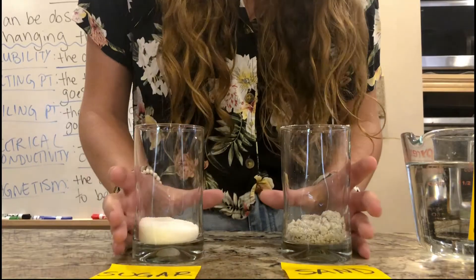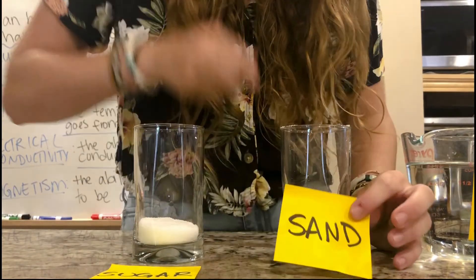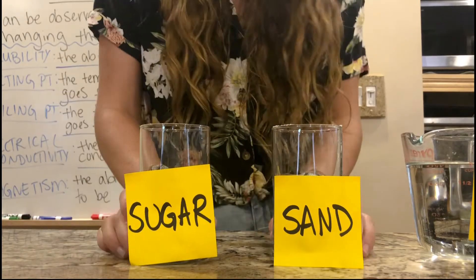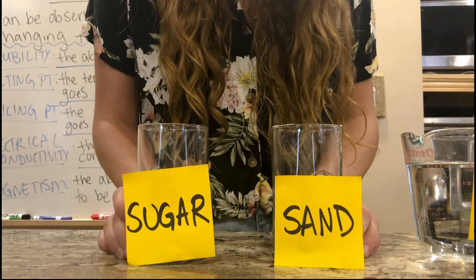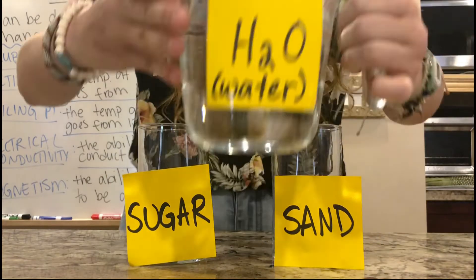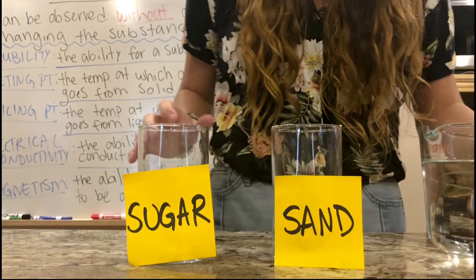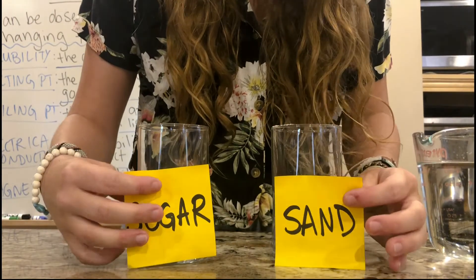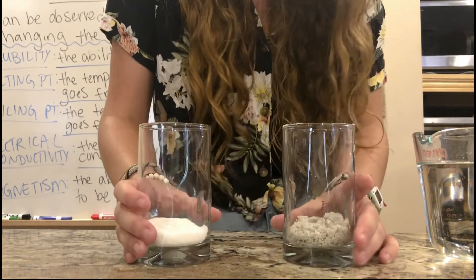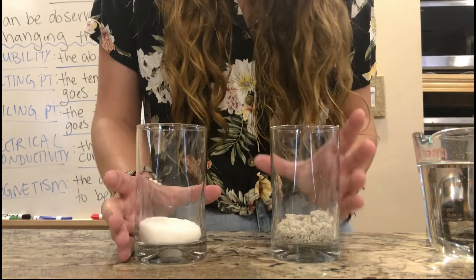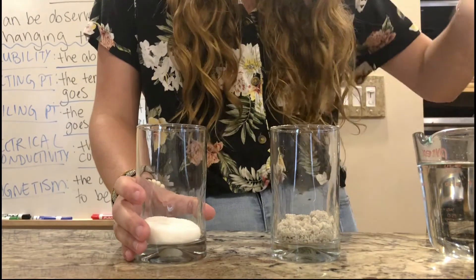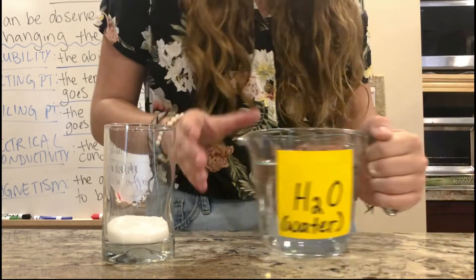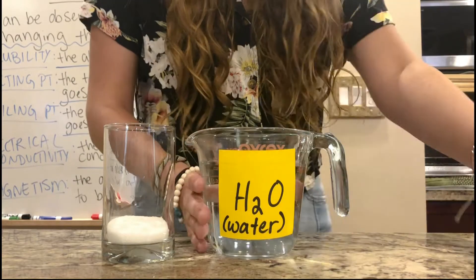We are going to see the different solubilities of two substances. I have sand here in this cup and sugar here in this cup, and we are going to test their solubility — the ability to dissolve — with water. Important words to know: solute and solvent. The solute is the substance that is going to be dissolving inside the solvent, which does the dissolving. Here my solute is sugar and my solvent is plain H2O.